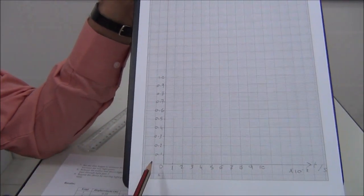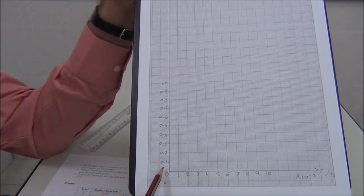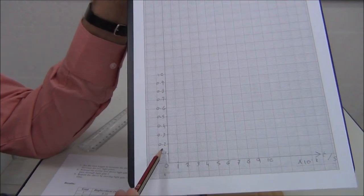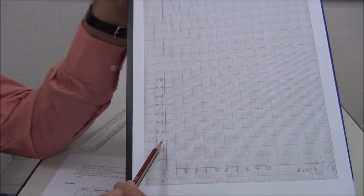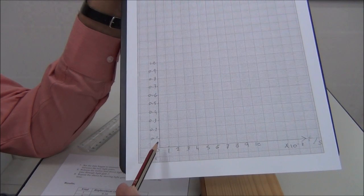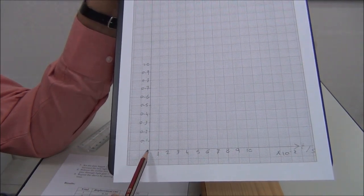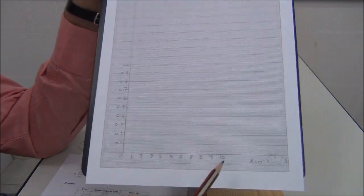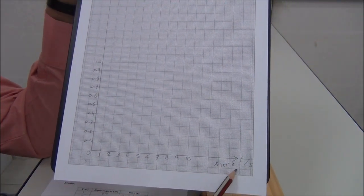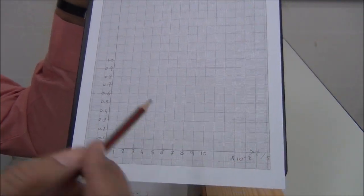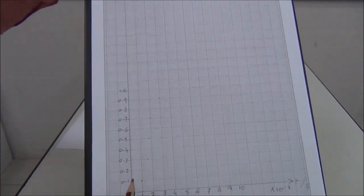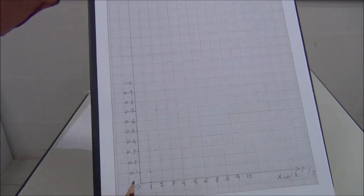The scale must be the same. Each one centimeter on the y-axis represents 0.1, so this is 0.1, 0.2, and so on. Each one centimeter on the x-axis represents 1, so 1, 2, 3, and remember it's multiplied by 10 to the power negative 2. We plot the points and draw a curve starting at zero.